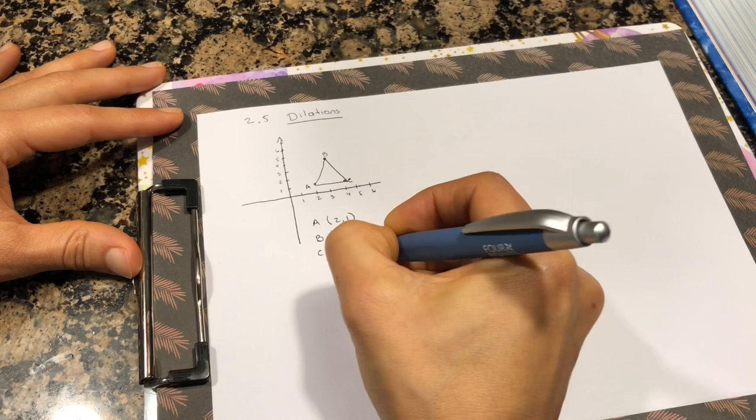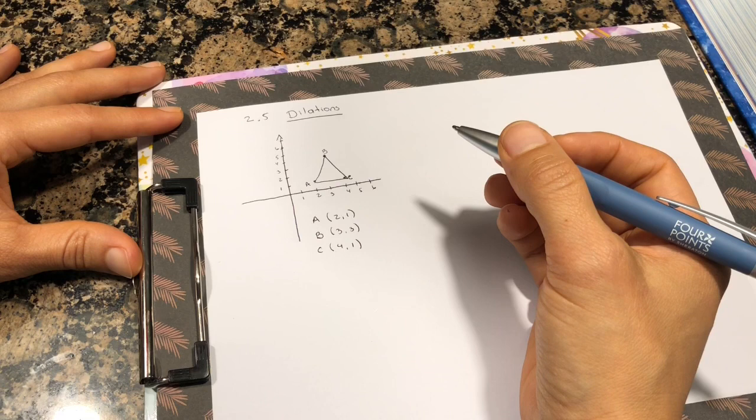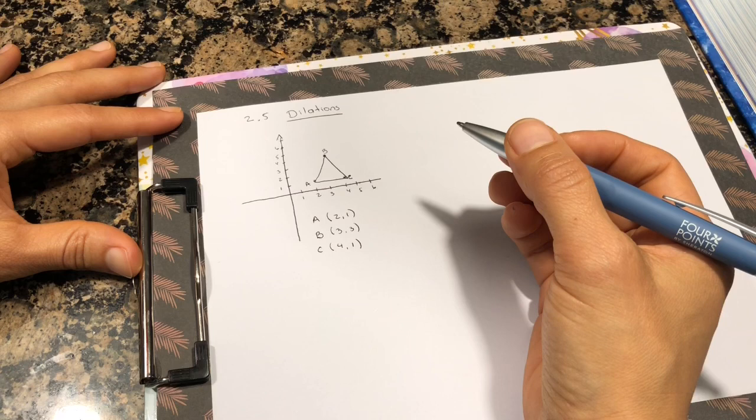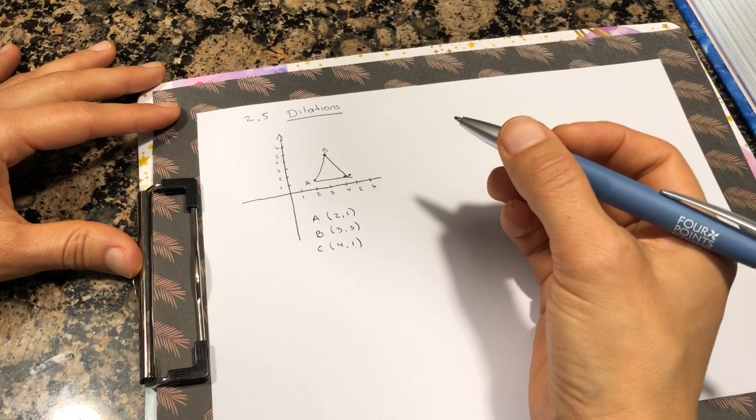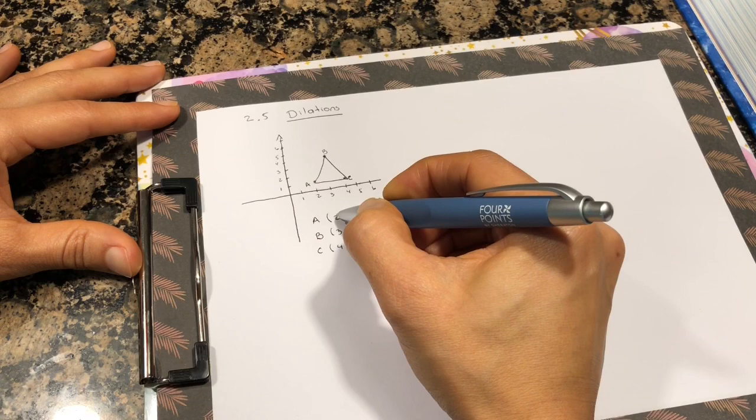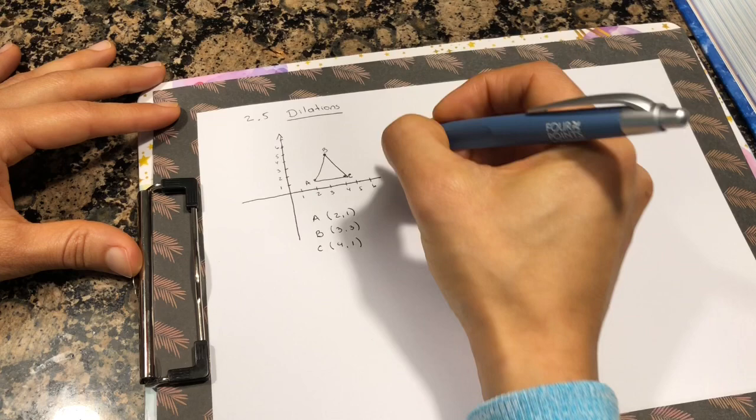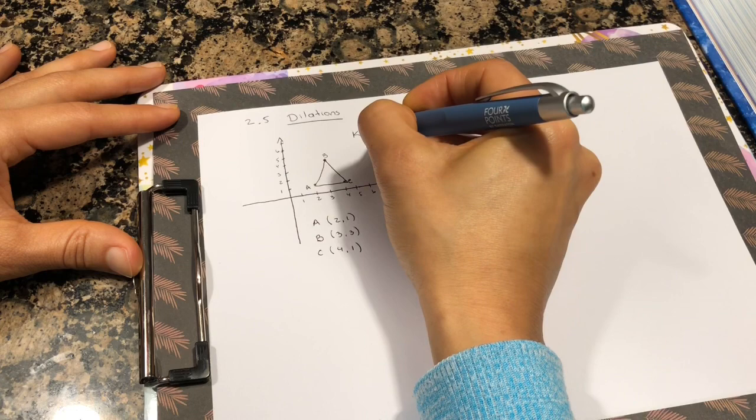Now I want to dilate this triangle. I'm going to dilate it by a scale factor of 2. I'm going to double the size of this triangle. So what we do when we have a figure in a coordinate, we multiply each point by the scale factor. In this case, the scale factor in the book says as k will be 2.